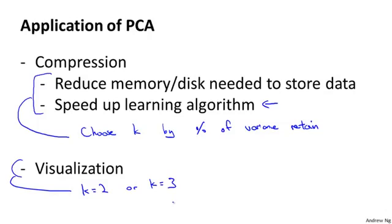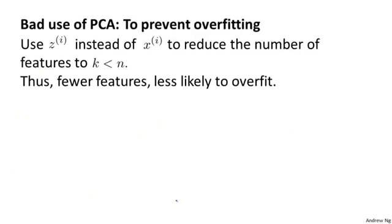I should mention that there's one frequent misuse of PCA. There's one bad use of PCA, which is to try to use it to prevent overfitting. Here's the reasoning behind this method. If we have xi, then maybe we'll have n features. But if we compress the data and use zi instead, that reduces the number of features to K, which could be much lower dimensional. So if we have a much smaller number of features, if K is a thousand and n is ten thousand, then if we have only a thousand dimensional data, maybe we're less likely to overfit than if we were using ten thousand dimensional data. So some people think of PCA as a way to prevent overfitting.